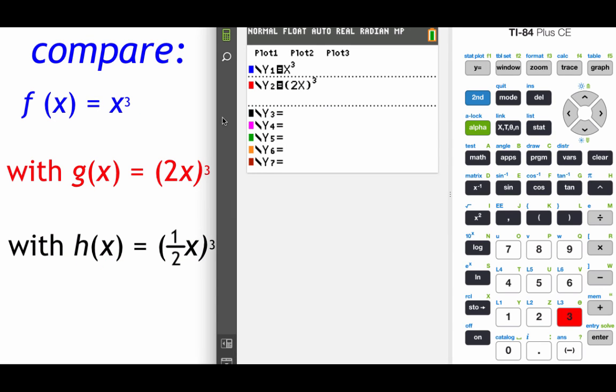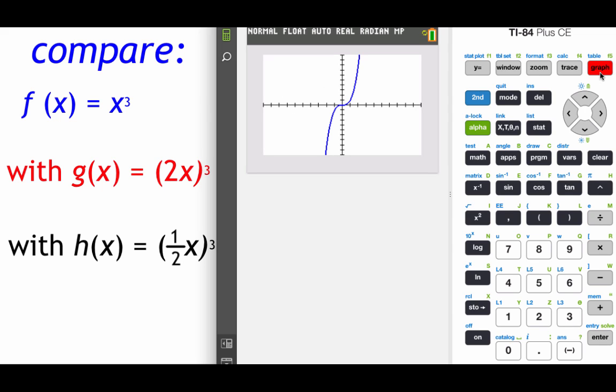So I've already got the first two functions typed into my calculator. We're going to look at f(x) equals x cubed, and then we're going to look at g(x) equals 2x cubed. So we're taking that x value and multiplying it by 2, and we're going to see how that affects our graph. So there's our two graphs. f(x) equals x cubed is the one that shows up in blue right here. Our red one is the g(x) equals 2x cubed. Since that c value was bigger than 1, we horizontally shrunk our graph. The sides of our graph came in closer.